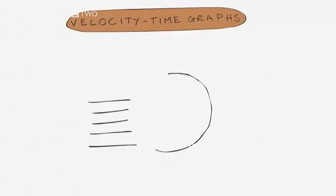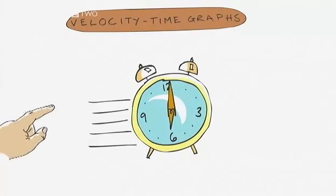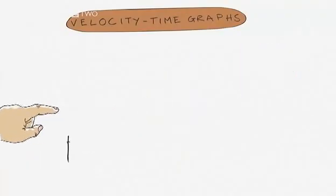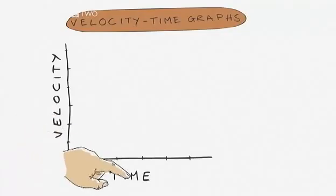Now, on to the second type of graph you need to understand. Velocity time graphs. Yes, those don't look like speed lines, do they? Let's just stick to the science. On a velocity time graph, the vertical axis is velocity and the horizontal axis is time.